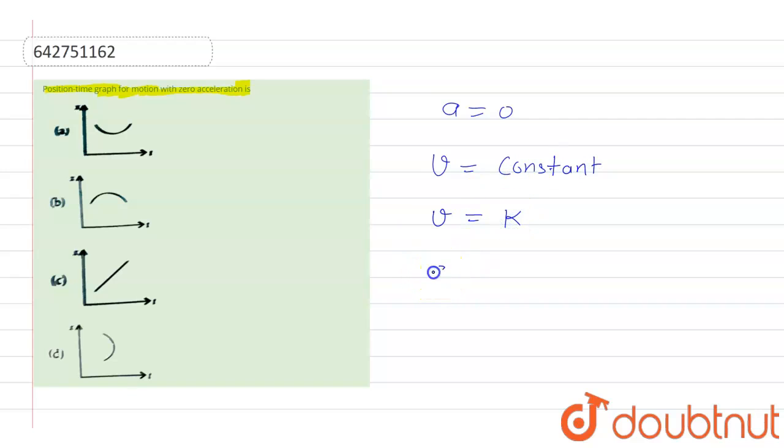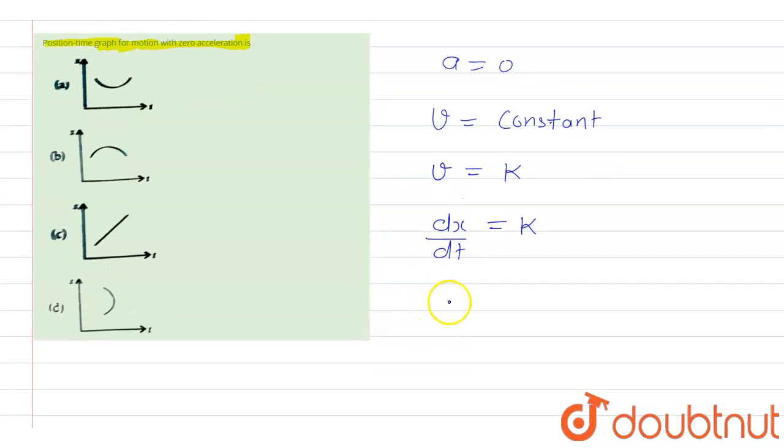If I write the differential form of velocity, that will be dx by dt, and it will be equal to k. Now further, dx will be equal to k dt. And when we integrate this equation from 0 to x and this is from 0 to t...